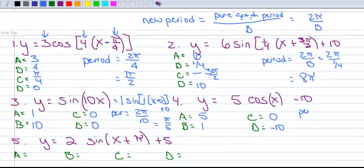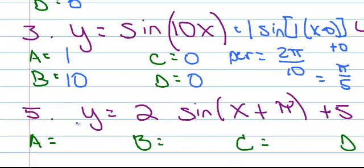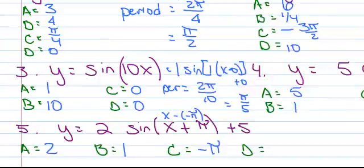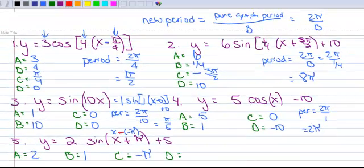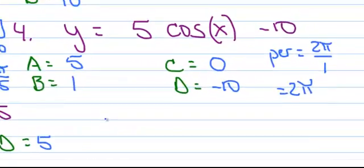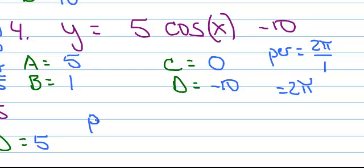Now let's do the period for number four. So the period is two pi over one, so that's two pi. No phase shift at all. And then number five, A is two, B is one, C is negative pi. Oh, I know that's negative because that would look like X minus a minus pi. Remember the standard form of the equation has a minus right here. D is five, and then our new period is two pi divided by B. B is one, so the period is two pi.